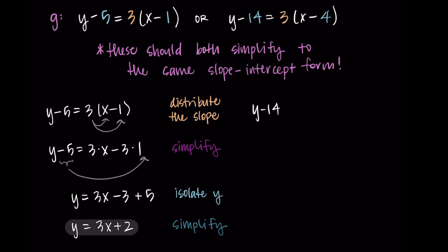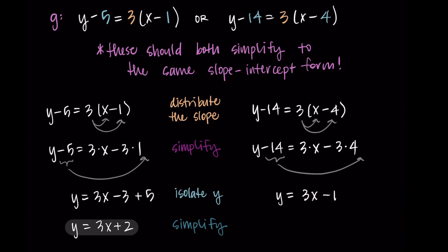Now let's repeat this for the other version of the equation for g. Starting with y minus 14 equals 3 times x minus 4, I distribute the slope: y minus 14 equals 3 times x minus 3 times 4. Adding 14 to isolate y gives y equals 3x minus 12 plus 14. Combining those constants, negative 12 plus 14 equals positive 2, giving the final answer y equals 3x plus 2. Both versions give the same answer, which is exactly why we put our final answer in slope-intercept form.